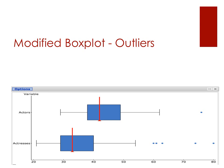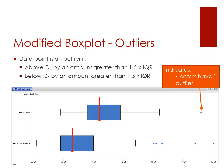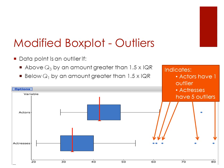Let's take a look at what we can identify from this set of box plots. We can see that actors have only one outlier, whereas actresses have five outliers — a great deal more outliers for actresses than for actors.